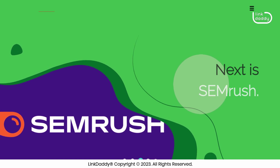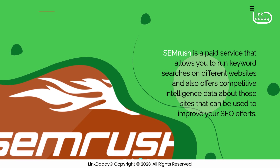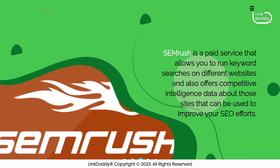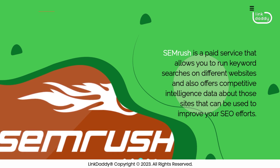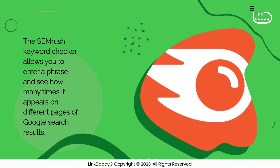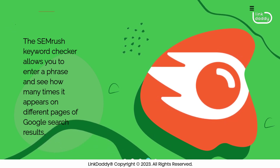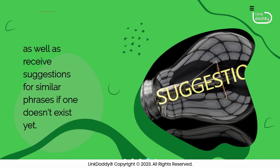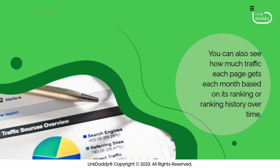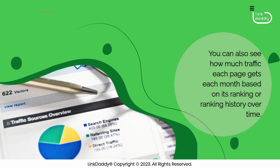Next is SEMrush. SEMrush is a paid service that allows you to run keyword searches on different websites and also offers competitive intelligence data about those sites that can be used to improve your SEO efforts. The SEMrush keyword checker allows you to enter a phrase and see how many times it appears on different pages of Google search results, as well as receive suggestions for similar phrases if one doesn't exist yet. You can also see how much traffic each page gets each month based on its ranking or ranking history over time.